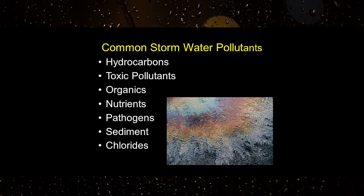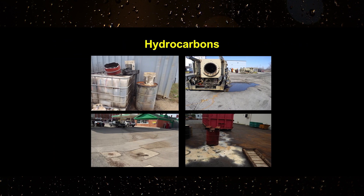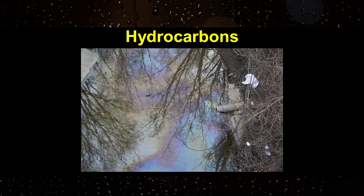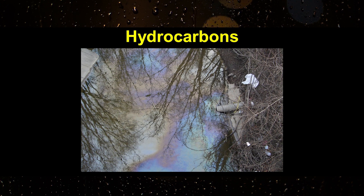Now let's discuss some common sources of these pollutants. Hydrocarbons such as gasoline, oil, and grease are introduced to industrial stormwater runoff from spills at oil storage and fueling facilities, automobiles and equipment, and improper disposal of waste oils. Hydrocarbons are known to be toxic to aquatic organisms at a relatively low concentration and should be a focus when considering or implementing stormwater runoff controls.